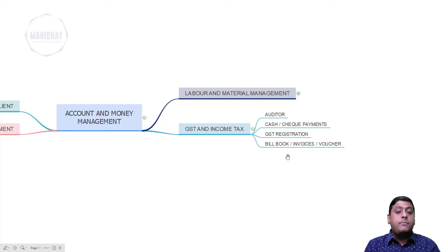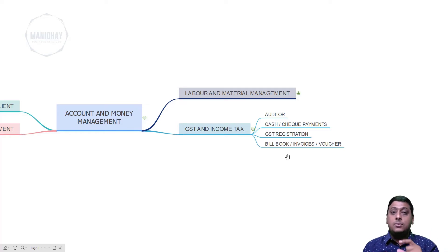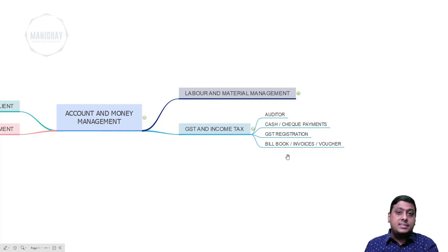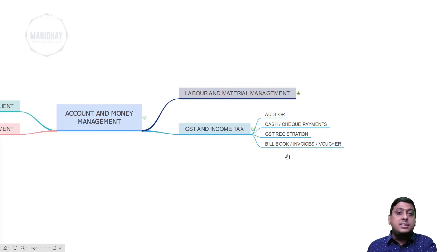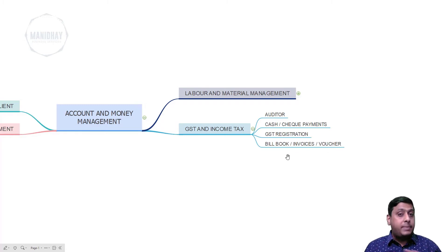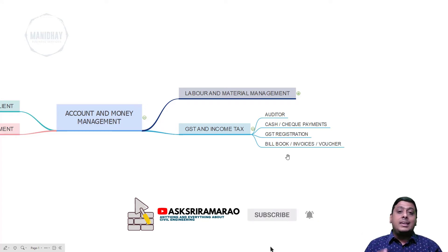For example, if you purchase 100 bags of cement at 300 rupees per bag, you pay 30,000 rupees inclusive of taxes. You then bill the same cement to the client at 310 rupees per bag — that is 31,000 rupees. For that extra 1,000 rupees only, you have to pay GST. The remaining GST is credited back to you since you already paid it. For income tax, the material expense paid by the client is not taxable — income tax applies only to that 1,000 rupees profit.